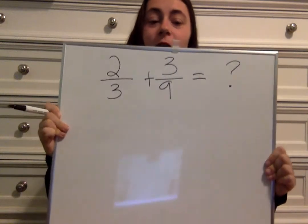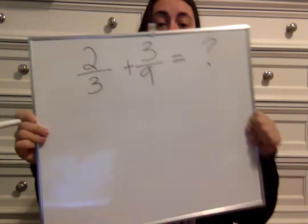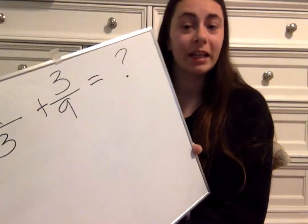Alright guys, so you are done solving or you are ready to watch me solve. We have two-thirds plus three-ninths. So right off the bat, you should notice that our denominators — three and nine — are family. We are family! These denominators, three and nine, are families.